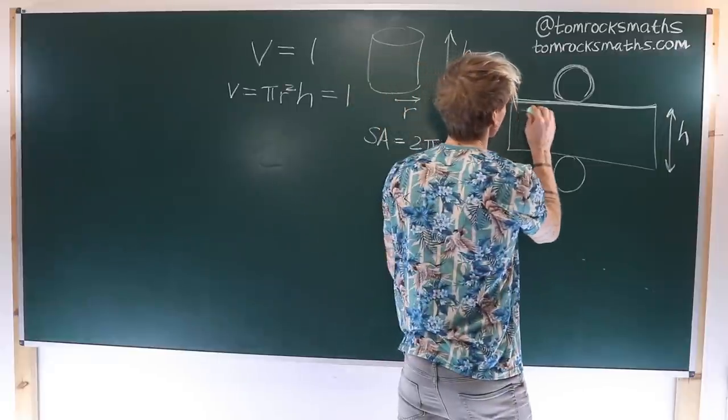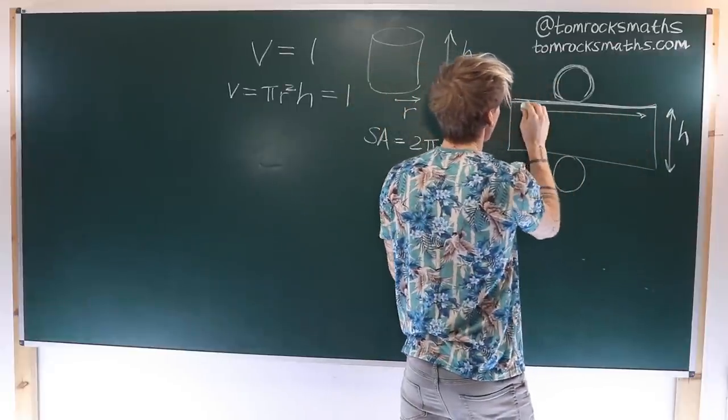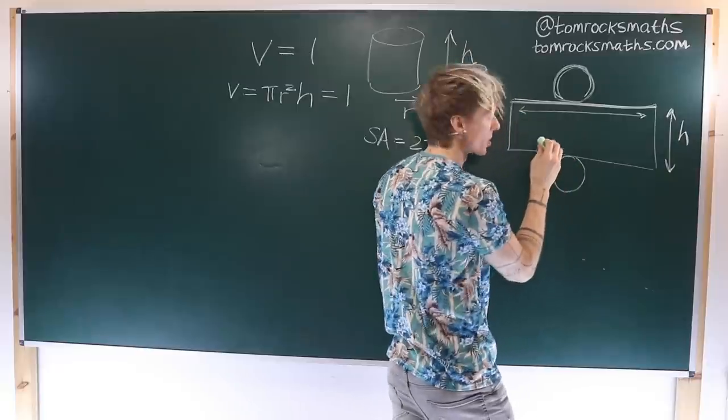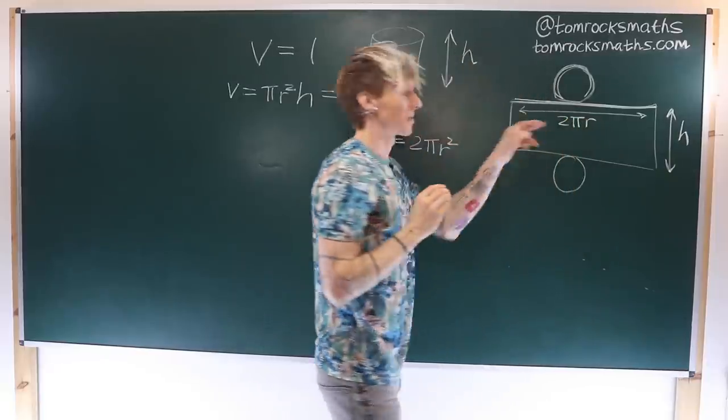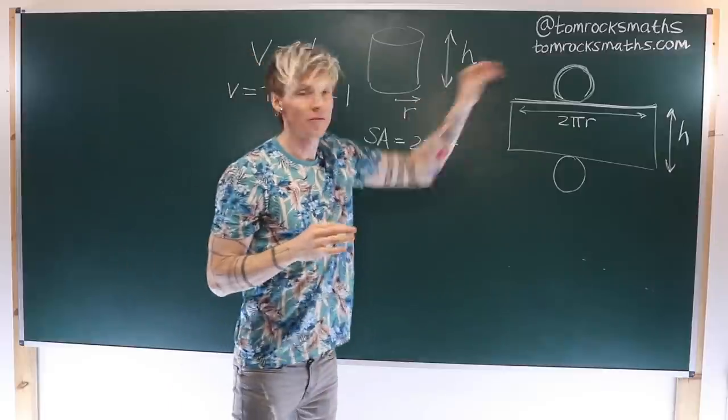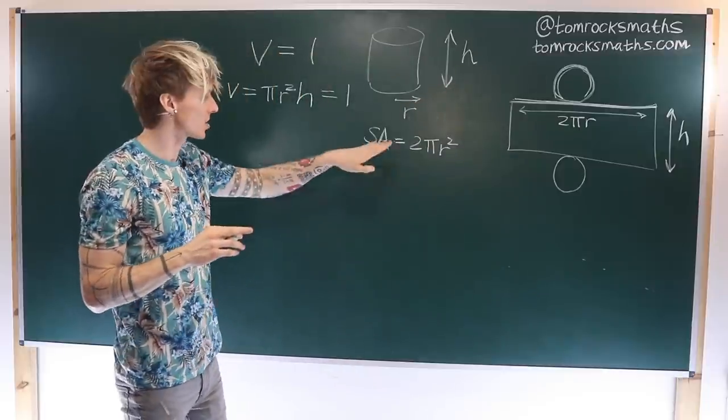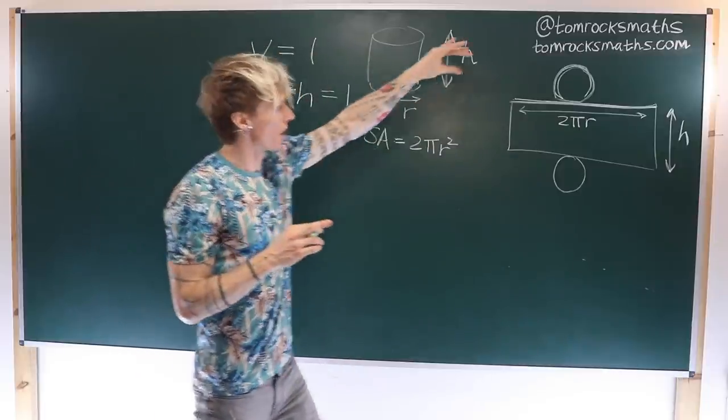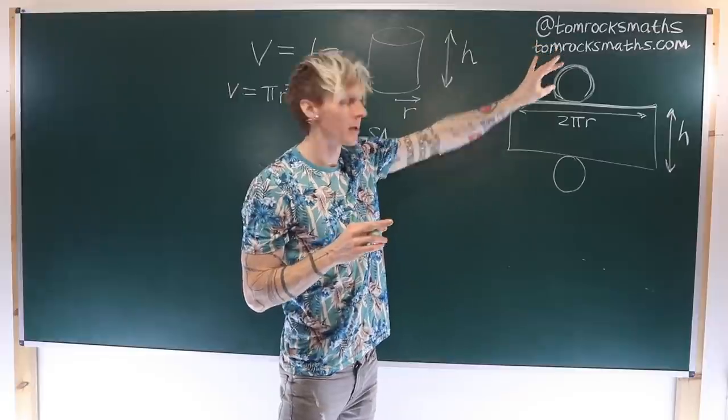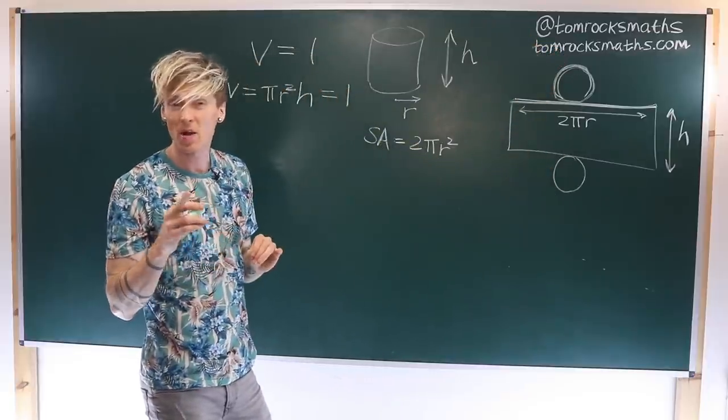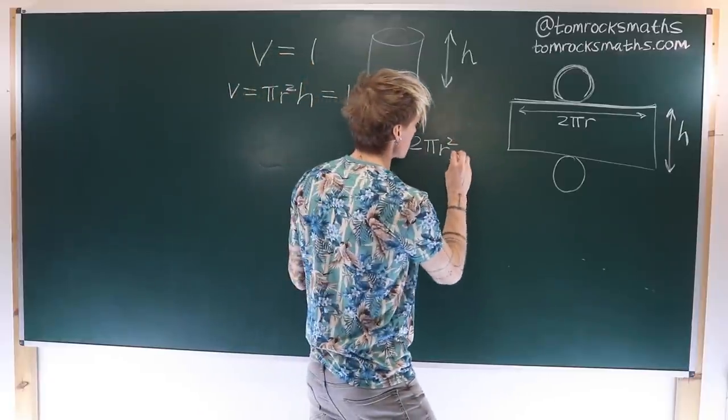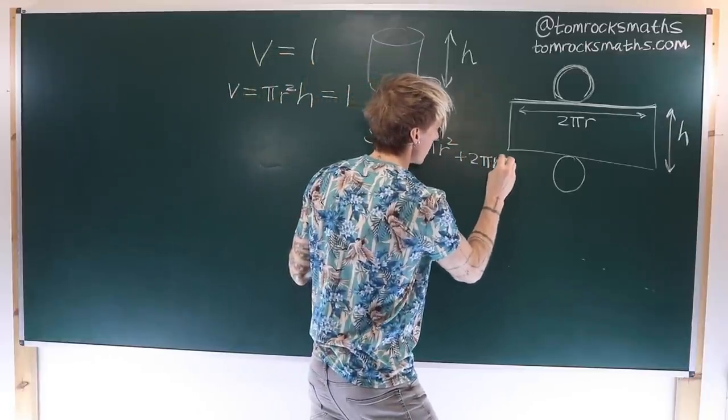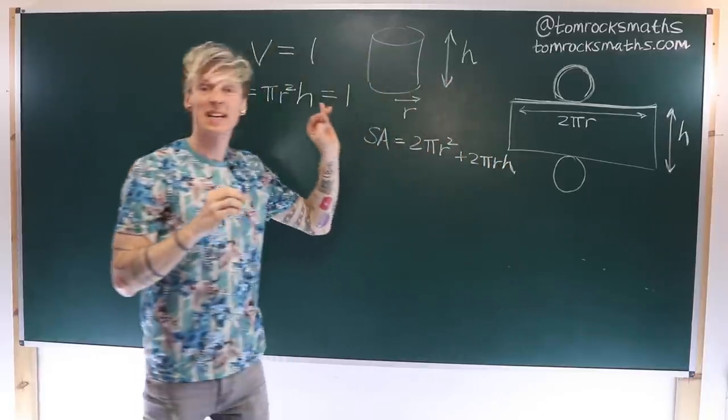So the rectangle width is therefore equal to 2π times the radius because that is the circumference of this circle. For our surface area we've got πr² from the top, πr² from the bottom, that's 2πr², and then we add on the area of the rectangle, which is plus 2πrh.